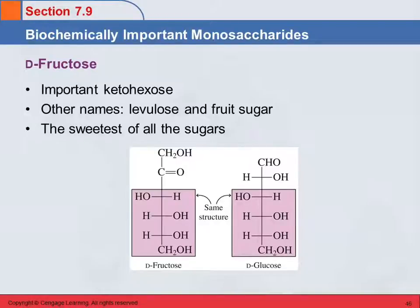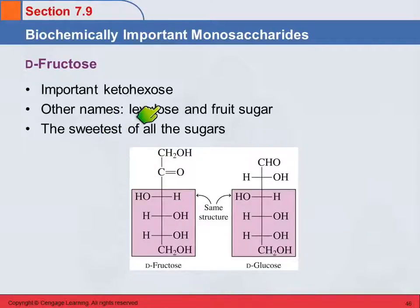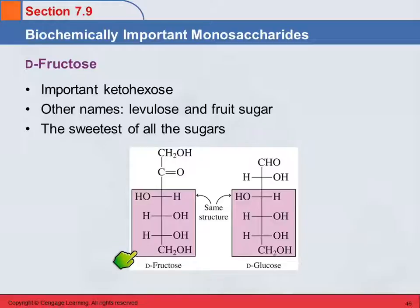Fructose is an important ketohexose, also called levulose or fruit sugar, and it is the sweetest of all the sugars. Fructose and glucose share the same OH pattern at the bottom: left, right, right. The difference is that fructose is a ketose and glucose is an aldose — other than that they're the same. It's called levulose because it rotates light to the left.